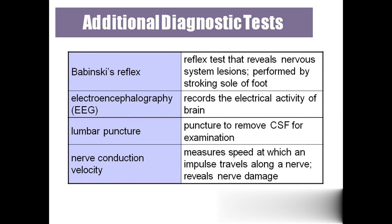'Nerve conduction velocity' — if there is any condition like neuroma, injury to the nerve, or a cut to the nerve, they will go for this test. It measures how fast electrical signals travel along the nerve. If the speed decreases or is lost, then something has happened in between the nerve, and they will confirm based on that.